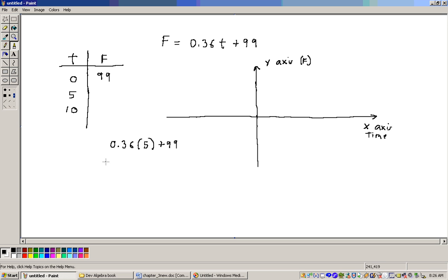Now, 0.36 times 5, we could do that off the side here. That's 0.36 times 5, and that will give me 1.8. That's what the 0.36 times the 5 is. Then, I've got to add on the 99, and I get 100.8.